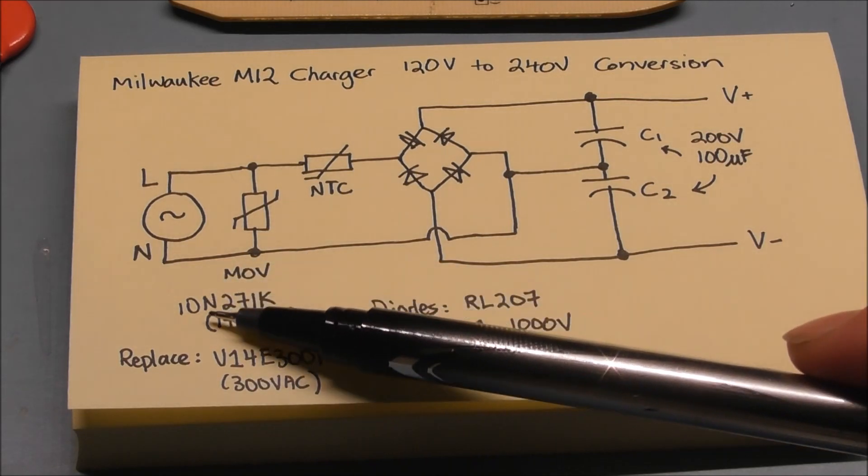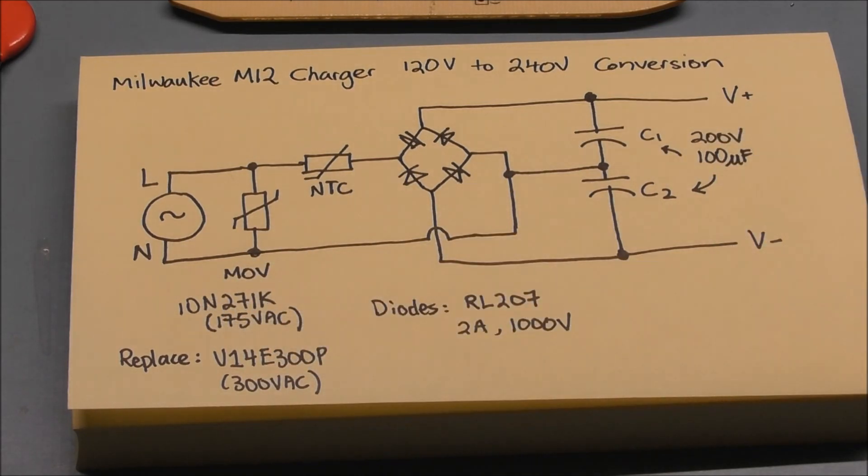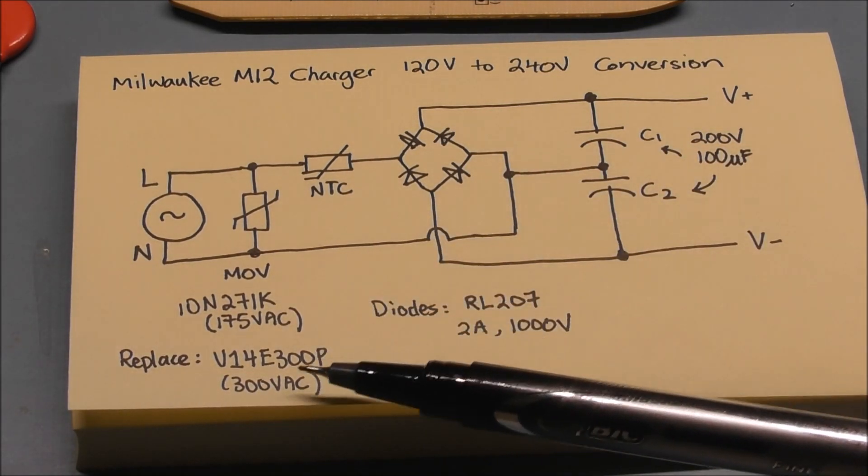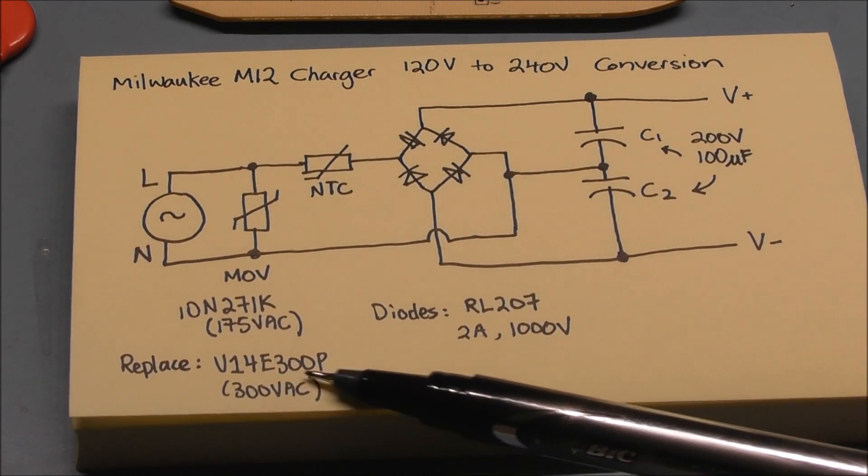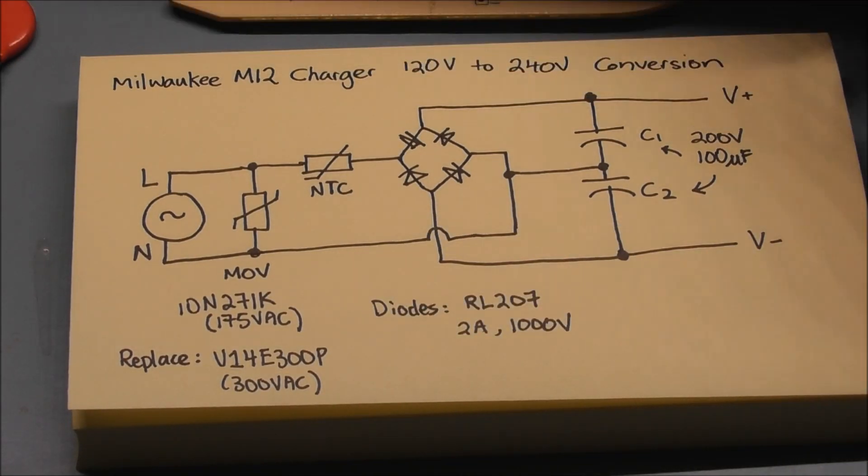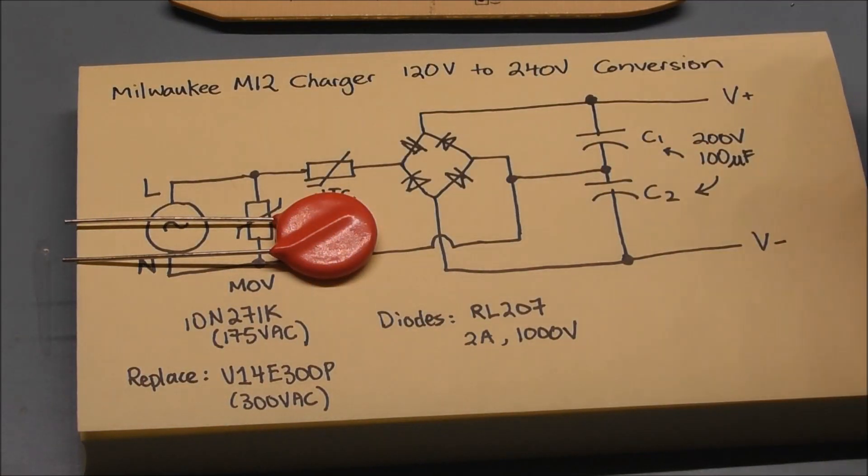Now the particular part number that's inside this charger is the 10N271K, and this particular part is only rated for 175 volts, so we will have to change this component. I have replaced this with a V14E300P 300 volt MOV. So this is the one over here that we will be replacing later on.